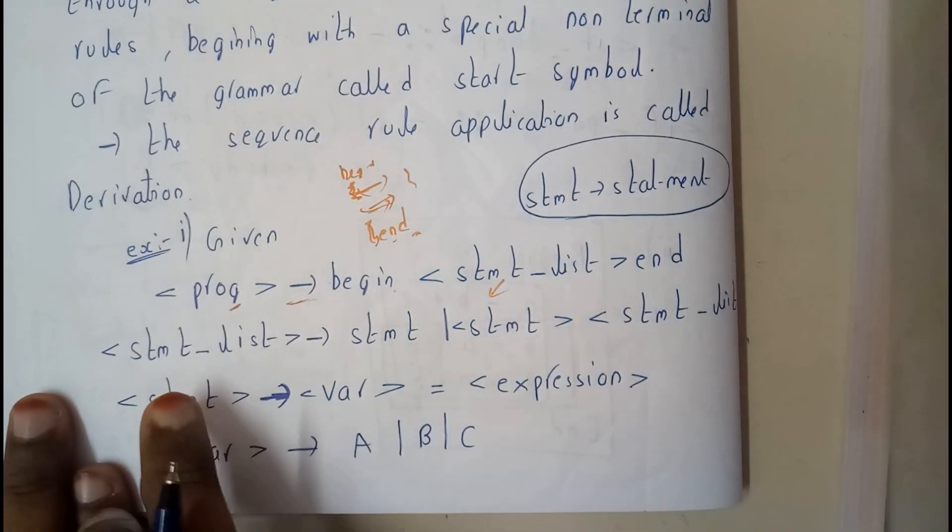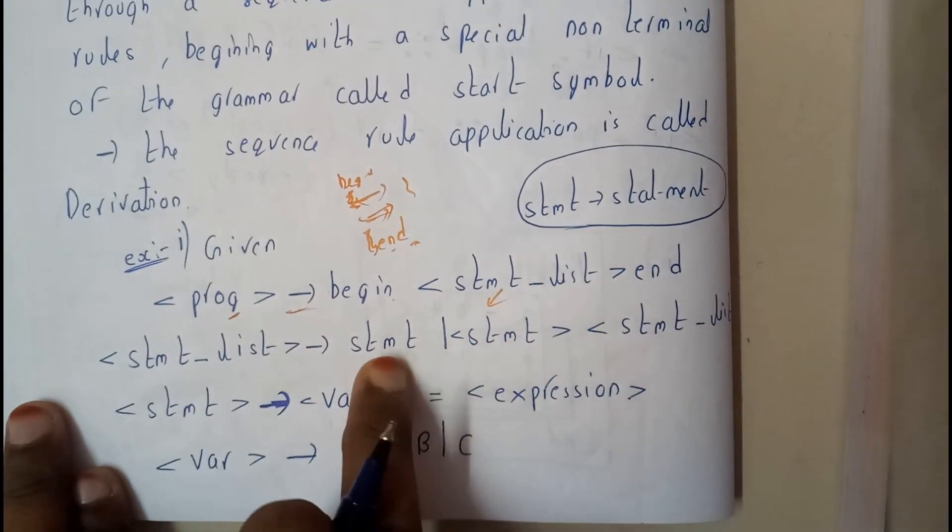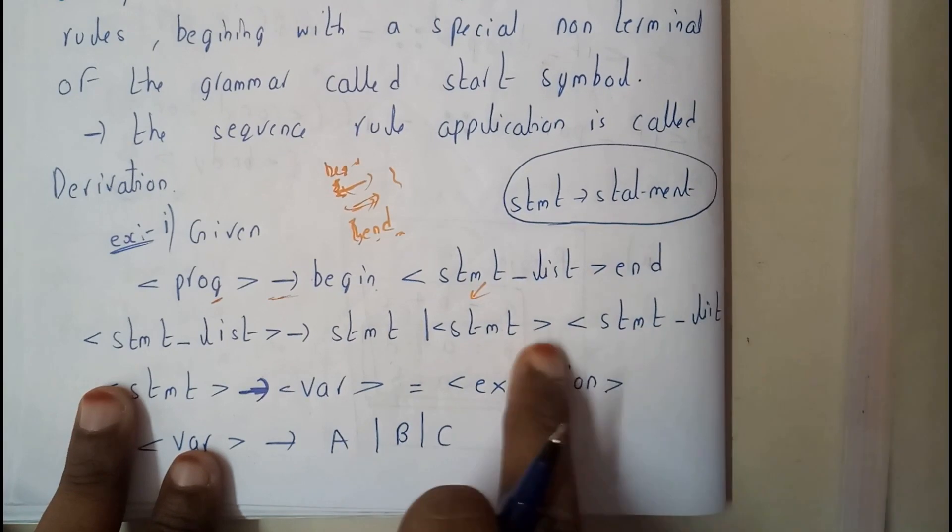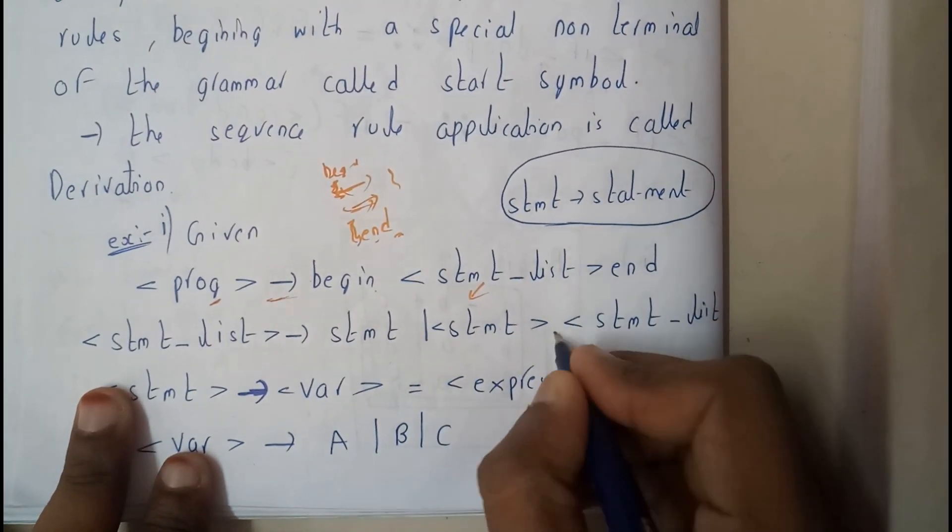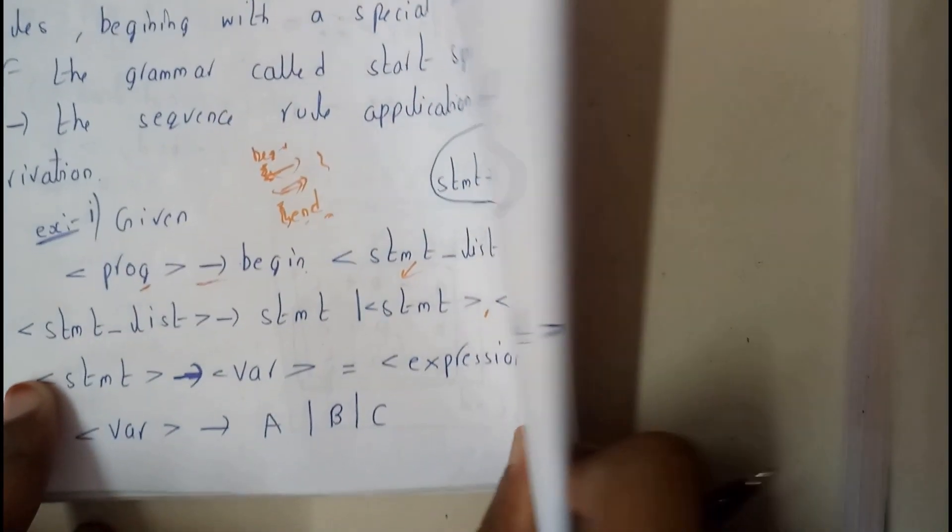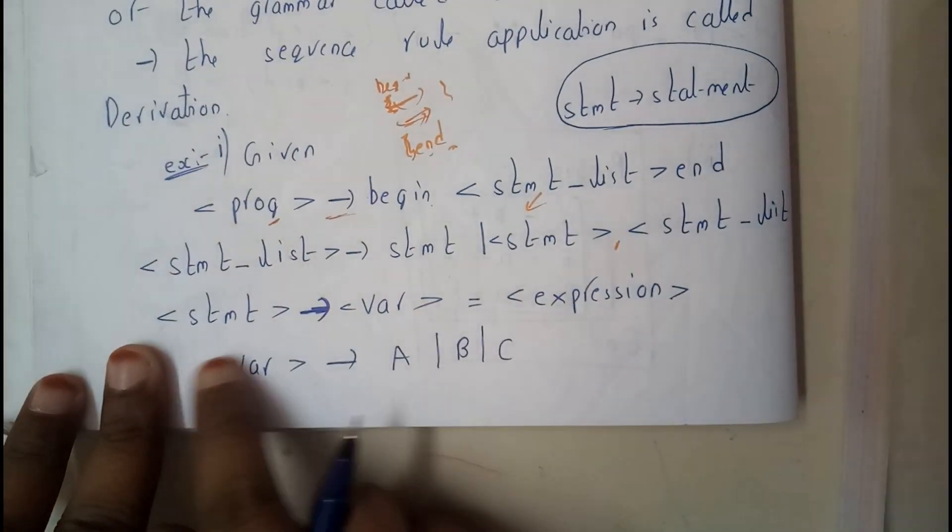Now let's go in detail on statement list. In the statement list we have a statement, or we may also have a statement list again. That may be a statement, or it might be a statement list.